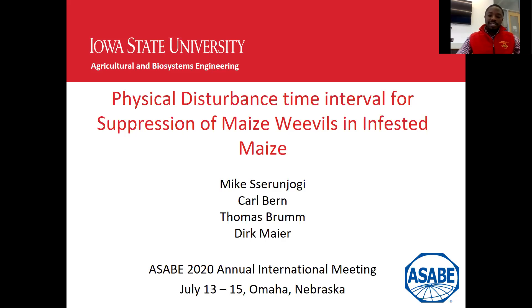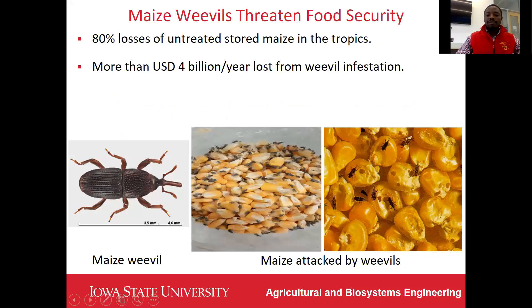In the United States we call maize corn, but it's all the same. Despite the global importance of maize, the vigorous challenge of maize storage in tropical countries is stored grain insect pests like maize weavers, which contribute up to 80% losses of untreated stored maize, accounting to more than 4 billion US dollars in losses.